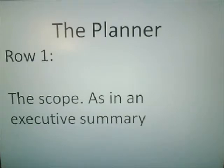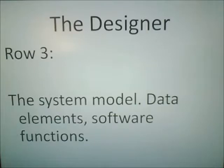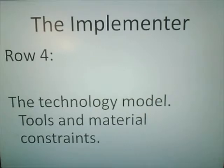The information from the planner goes into a matrix. Row one has to do with scope as an executive summary. Row two, the information from the owner, is the business model. The designer goes into row three — the system model, including data elements and software functions. The implementer is row four, the technology model.